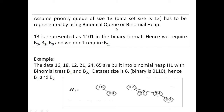Let us build the priority queue of size 13 using the binomial queue. 13 is represented as 1, 1, 0, 1 in the binary equivalent format. Hence, we require 1 b0 binomial tree, 1 b2 binomial tree and 1 b3 binomial tree. We do not require a b1 binomial tree.